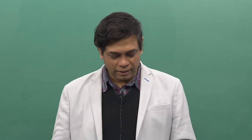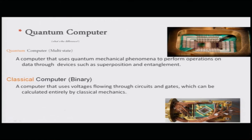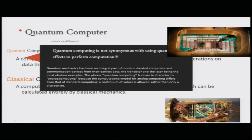We are discussing quantum computers and the main difference from classical computers. A quantum computer is a multi-state variant that uses quantum mechanical phenomena to perform operations on data through devices such as superposition and entanglement. The classical computer, on the other hand, uses voltages flowing through circuits and gates, which can be calculated entirely by classical mechanics.